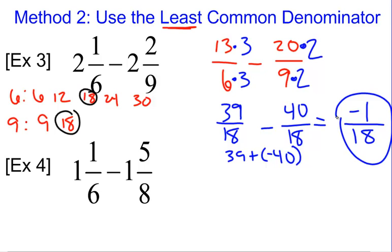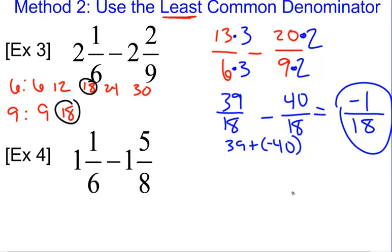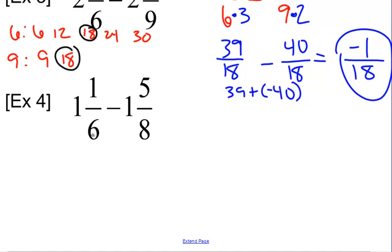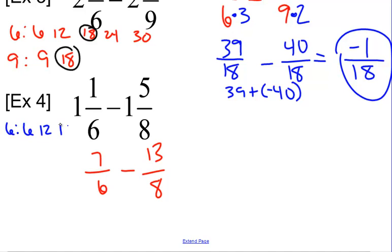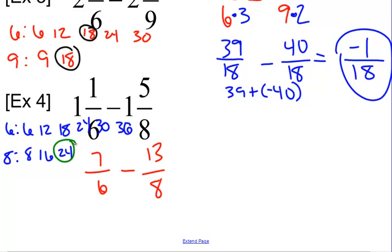Try number 4 on your own. Welcome back. Let's change these into improper fractions. 1 times 6 is 6, plus 1 is 7 sixths. Minus — 1 times 8 is 8, plus 5 is 13 eighths. Let's list the common multiples. Common multiples of 6: 6, 12, 18, 24, 30, 36. For 8: 8, 16, 24 — we found it. So 24 is going to be our least common denominator.